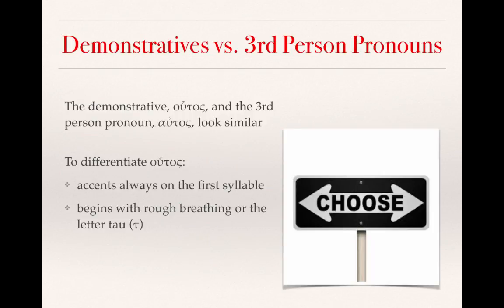A word of warning: demonstratives can seem a lot like the third-person pronouns. The demonstrative houtos and the third-person pronoun autos look similar. To differentiate, the houtos will always have the accent on the first syllable, and it will either begin with a rough breathing or with the letter tau.